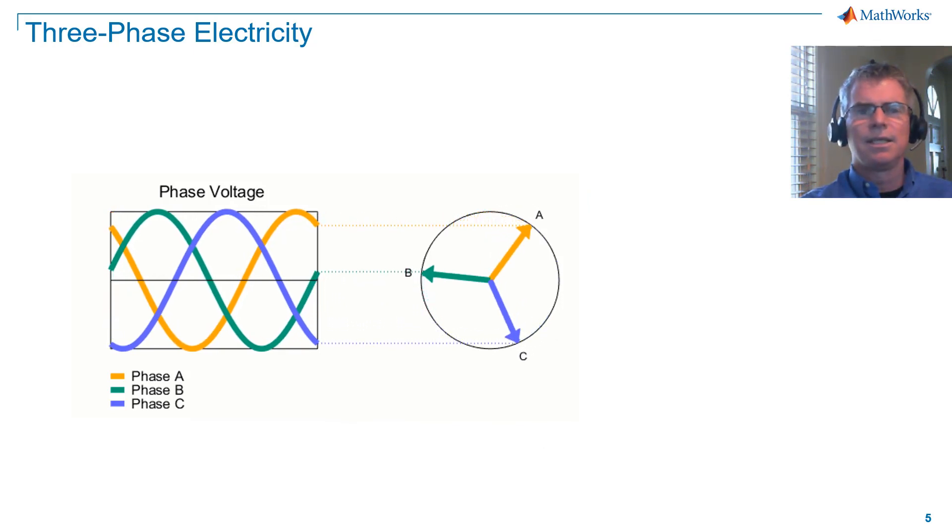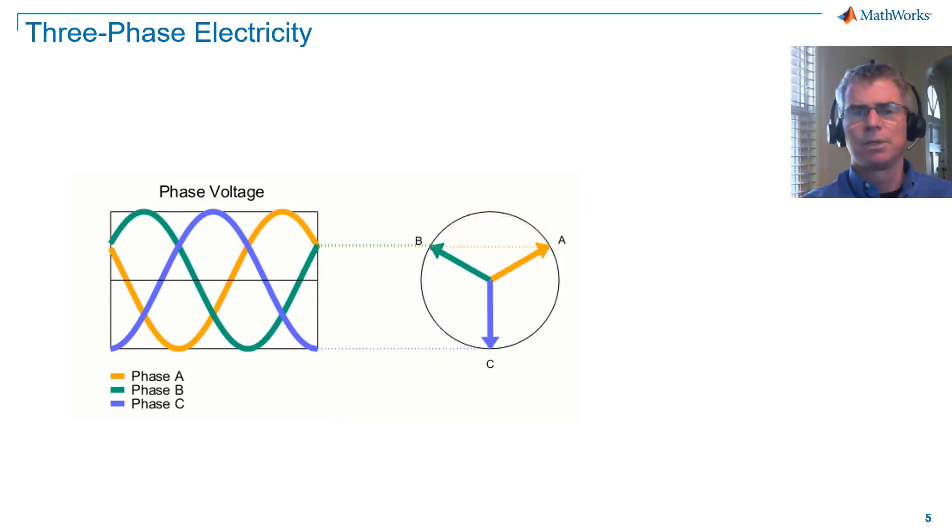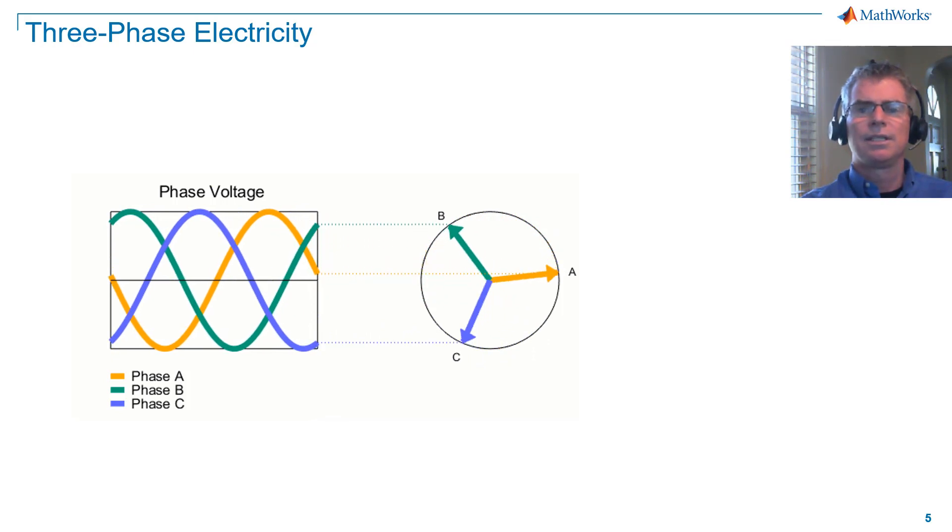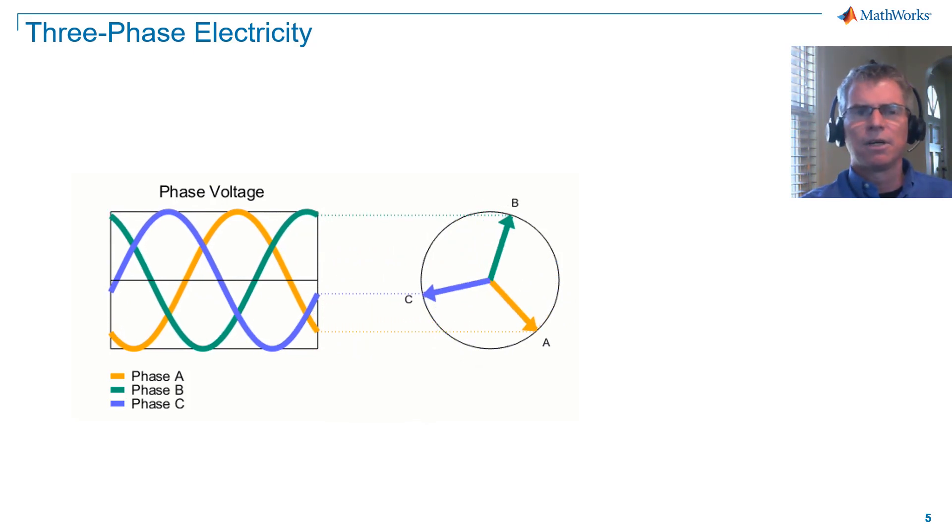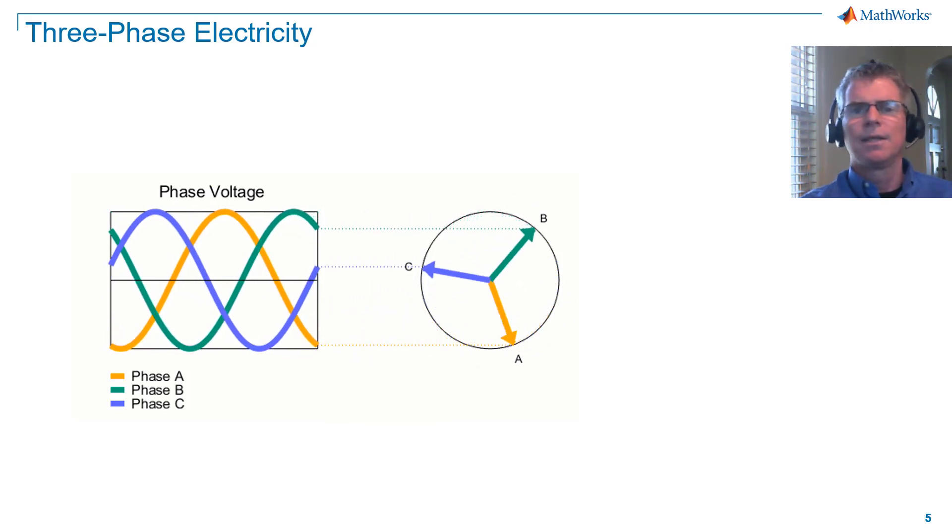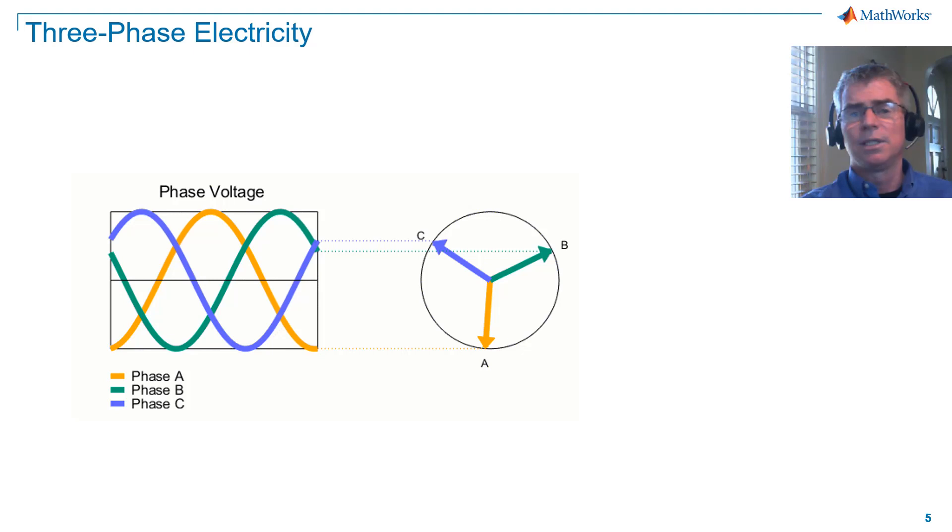Here we see the instantaneous waveforms for voltage as time progresses, and the associated vector representations. From the vector representations, we confirm that magnitude is equal and that the sinusoids are 120 degrees apart.